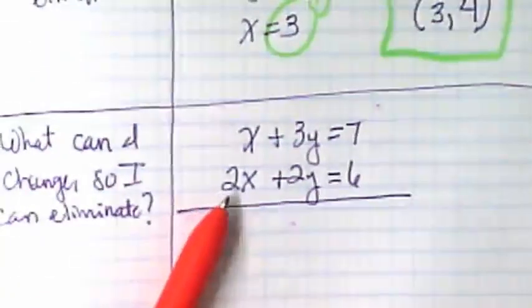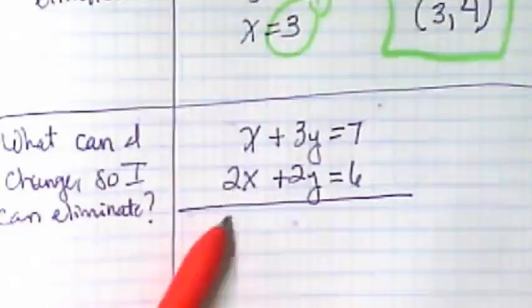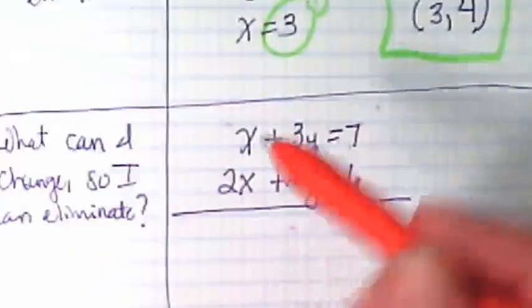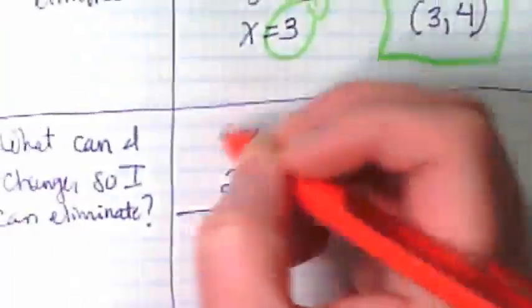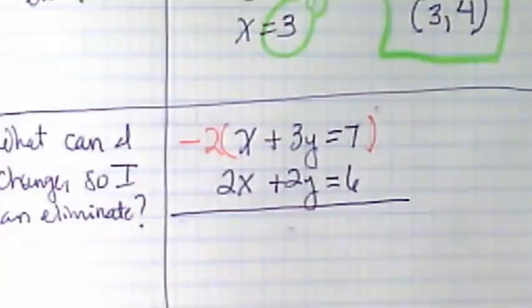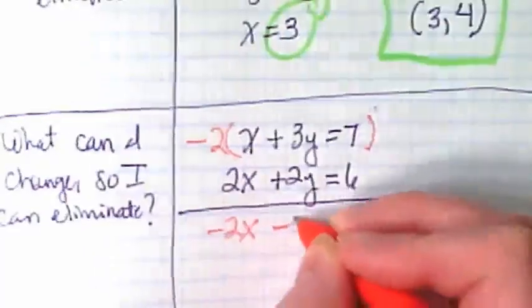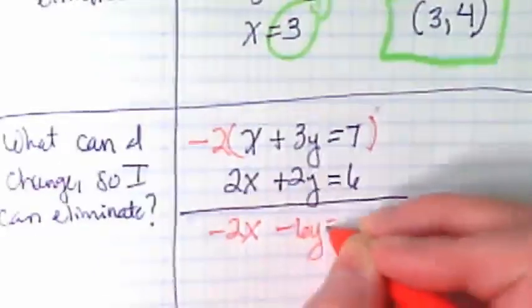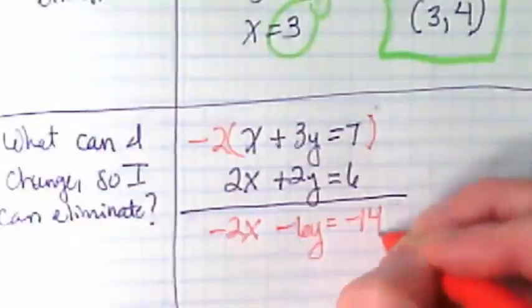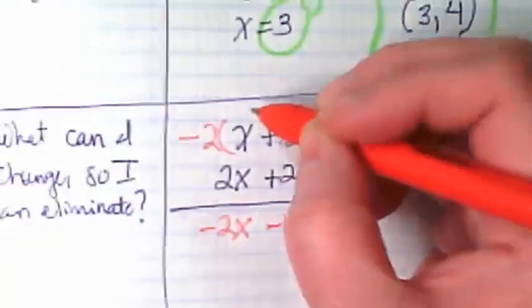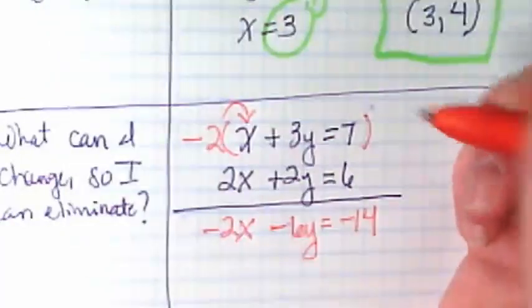I am looking at this and thinking, hmm, this is a positive 2X. How can I make this X terms go away if I make this into a negative 2X? So I'm going to change the first equation by multiplying it by negative 2. And I'm going to end up with negative 2X minus 6Y equals negative 14. How did I get each term? Negative 2 times X gave me this.